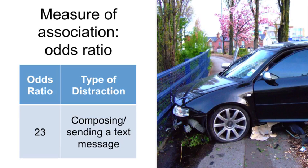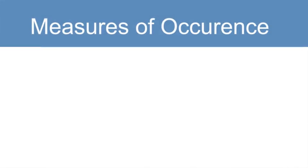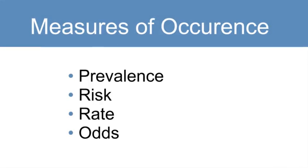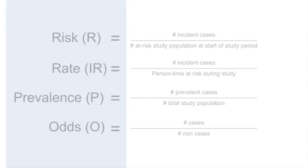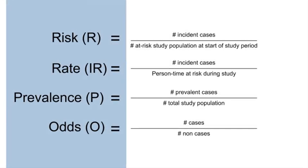Let's talk now about the definitions and formulas for measures of association. Up to this point in the MOOC, we have covered measures of disease occurrence, which include prevalence, risk, rates, and odds. Here are the actual formulas for these measures of disease occurrence. I want to review them now because they are the building blocks for the measures of association.